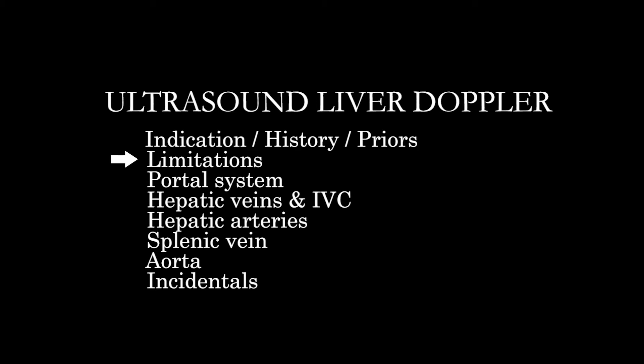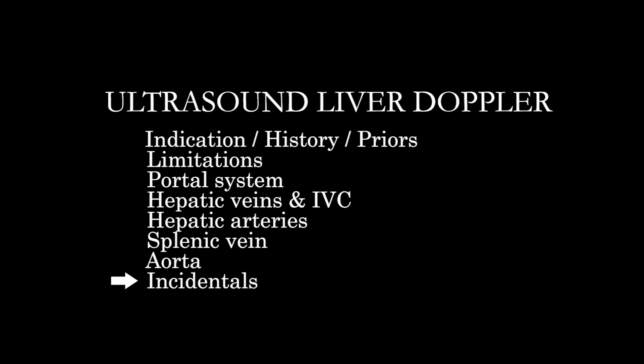We're going to go through and look at the whole study, getting a sense of whether we're evaluating all the anatomy of interest. I like to group them into the portal system, the hepatic veins and IVC, the hepatic arteries, and then the splenic vein and the portal system outside of the region of the liver. You'll also see the aorta, and then any incidentals we may pick up.